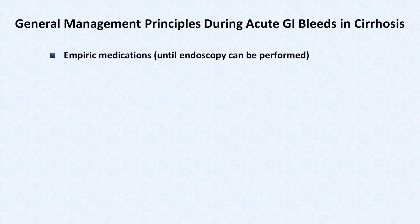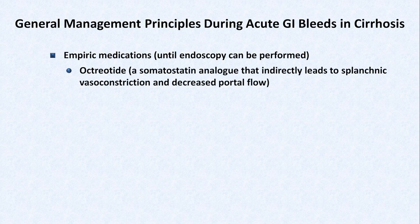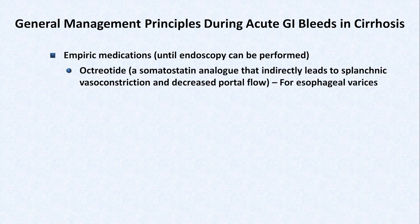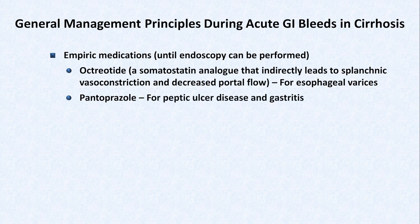What are some medications that should be started while waiting for endoscopy? Most patients receive two. Octreotide, which is a long-acting somatostatin analog, inhibits the release of vasodilating hormones leading to splanchnic vasoconstriction, reducing portal flow. It's given as a 50 microgram bolus followed by 50 micrograms per hour for 3 to 5 days. Outside the US, terlipressin is sometimes used instead of octreotide. These meds are specifically used for bleeding esophageal varices. The other class of medication that should be administered is pantoprazole, or another intravenous proton pump inhibitor, empirically used predominantly for peptic ulcer disease and gastritis. Once a diagnosis is established via endoscopy, either medication not felt to be indicated is of course stopped.